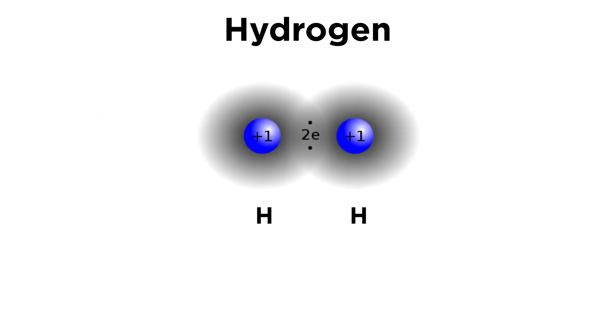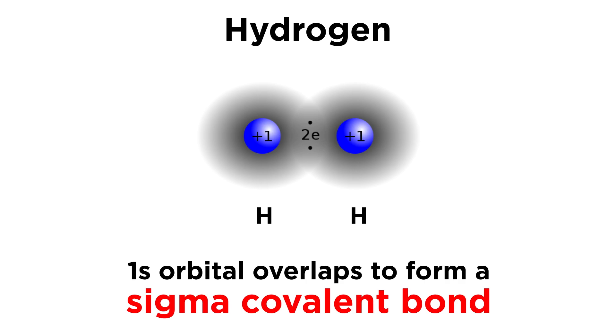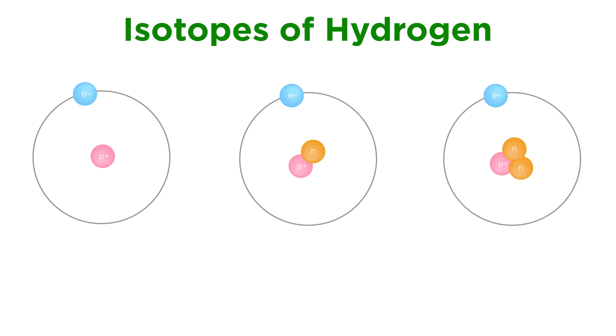Neutral hydrogen with an oxidation state of zero is capable of making a single covalent bond, which involves the overlap of the 1s orbital with some other orbital to produce a sigma bond, which can occur in any direction. Additionally, hydrogen has three naturally occurring isotopes.